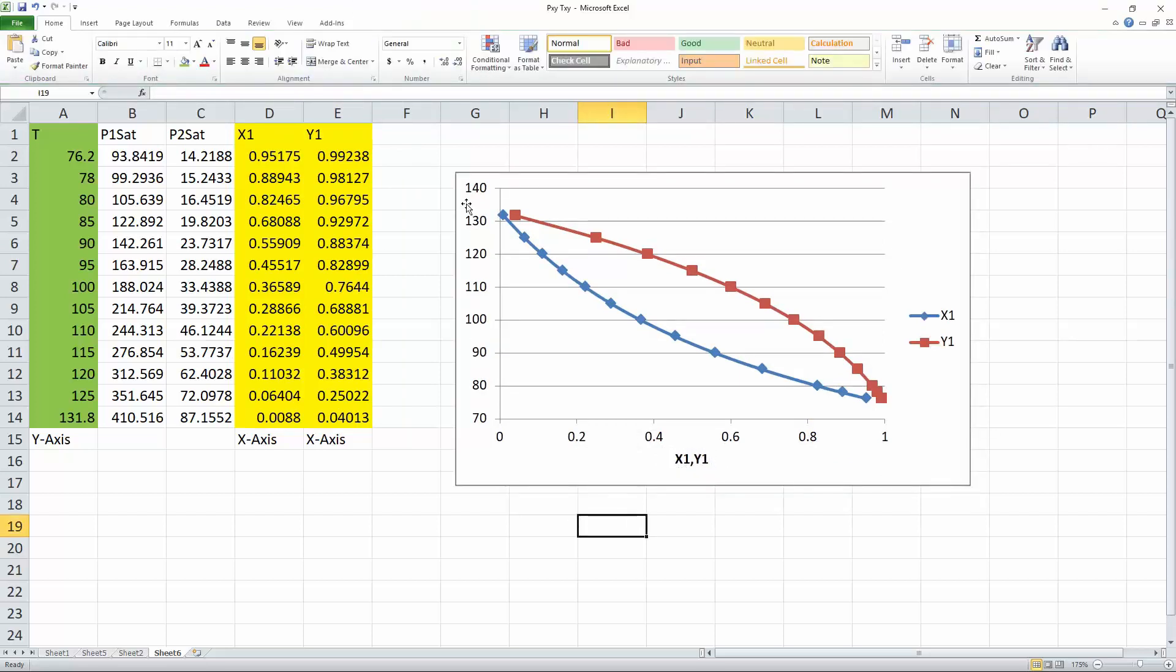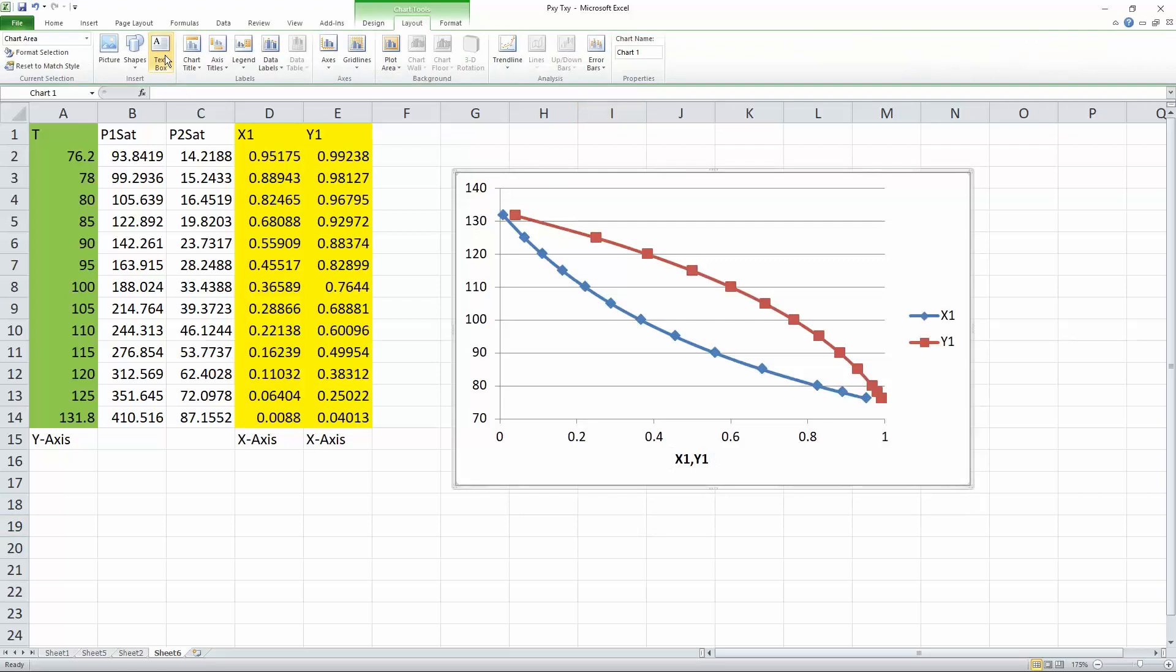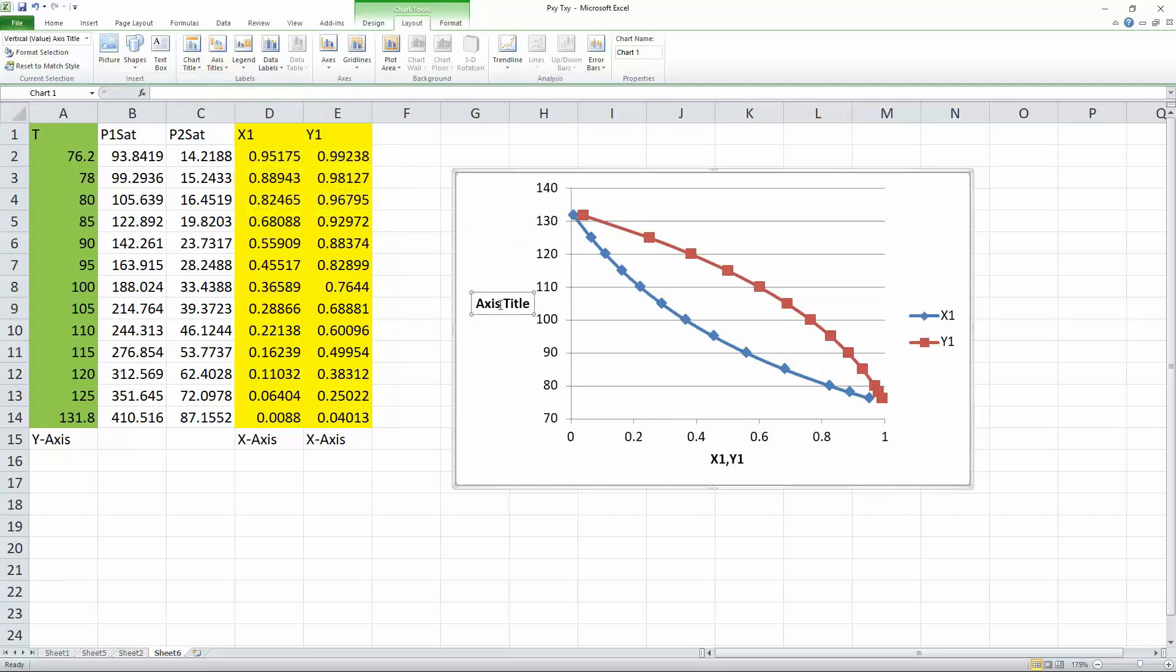Next, we do the y-axis, select it again, hit axis title, hit primary vertical axis, go down to horizontal. We can call it t parentheses in Celsius, hit okay.